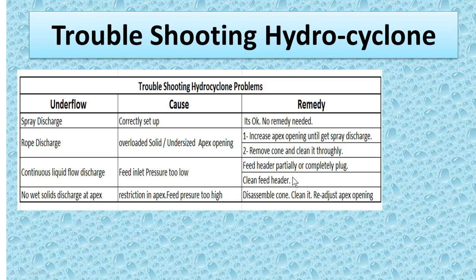Low wet solid discharge at apex: what can be the cause? Restriction in the apex, or feed pressure too high. Remedy: disassemble the cone, clean it, and readjust the apex opening.